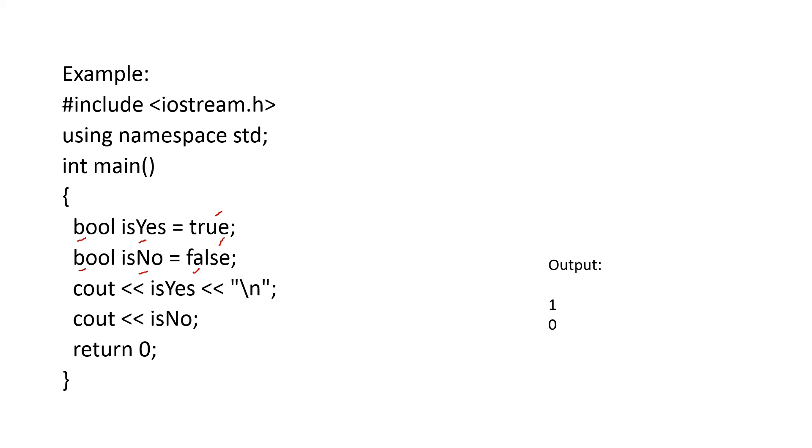Backslash n. Cout isNo. We know that if something is true, the value is 1. If something is false, the value it will print is 0. Here isYes and that is true, so 1 will be printed. And isNo, that is false and 0 will be printed.